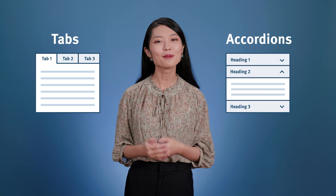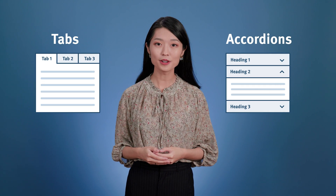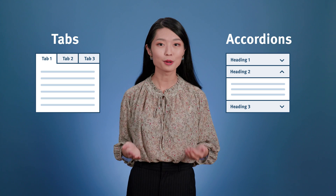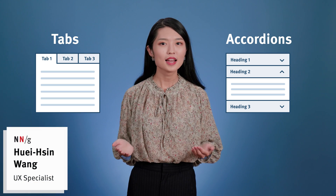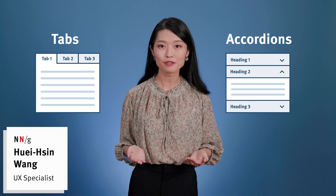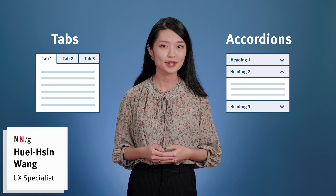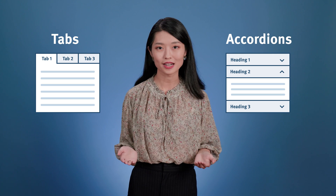Tabs and accordions are two common design patterns that are often used to structure content on a single page. Instead of showing everything at once, they give users a high-level overview of all the available topics and provide the option to access additional content. This helps reduce visual clutter and focus users' attention on the important information at hand. Despite the similarities, tabs and accordions have their own unique strengths and challenges. In this video, I'll discuss their characteristics and when it's best to use each design pattern.